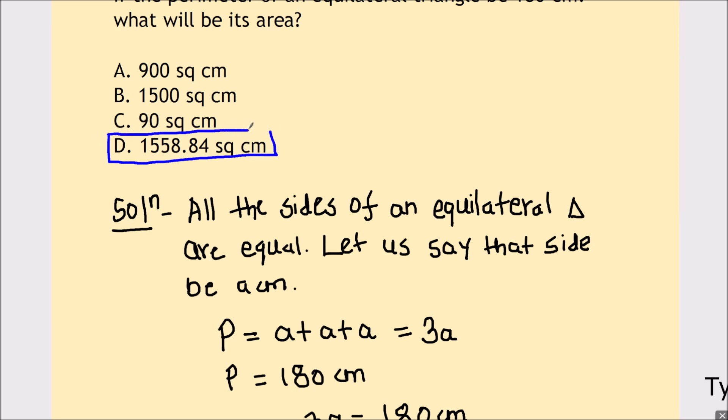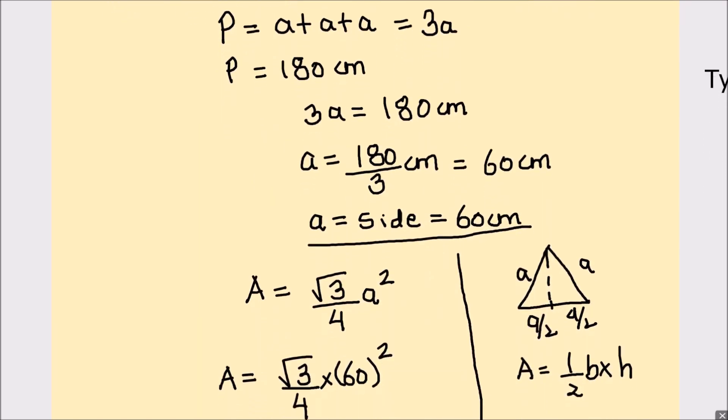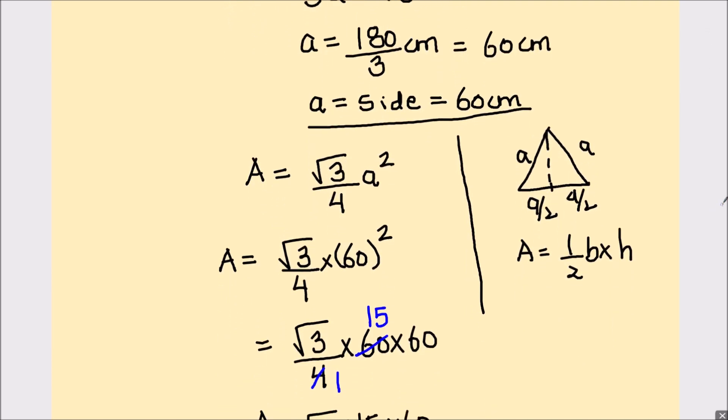So this is how we can find the area of equilateral triangle when its perimeter is given. I hope this video is helpful to you. If you like the video please hit the like button and subscribe to my channel for more math videos. Thanks for watching.